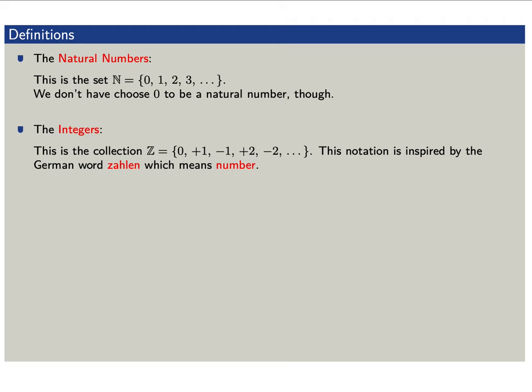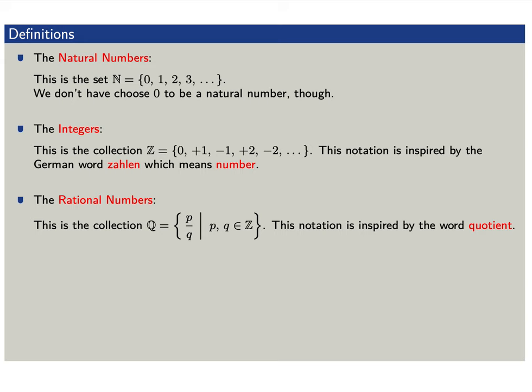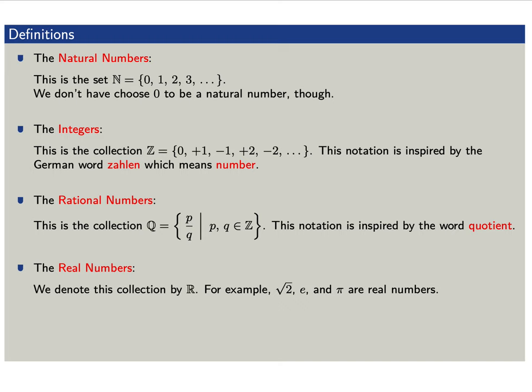Next, we have the rational numbers — the collection of quotients p over q, where p and q are integers. We use Q, for quotients, to denote the rational numbers. To this point in the course, we've been looking at the real numbers, which we denote by capital R.